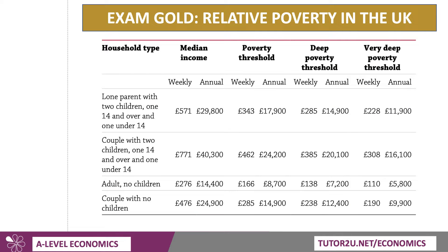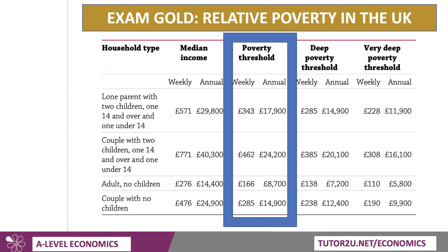The poverty threshold in the UK is 60% of median. For example, if you're a lone parent with two children, an annual income below £17,900 would put you below the poverty line. If you're a couple with two children, it's £24,200. An adult with no children: £8,700. A couple with no children: £14,900. You can also express it in pounds per week.